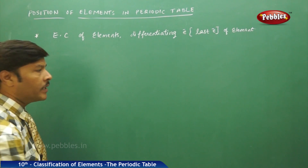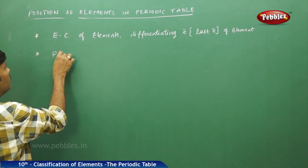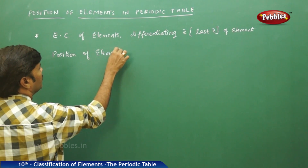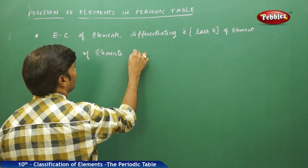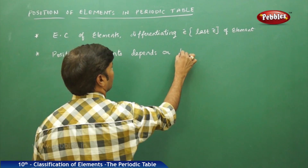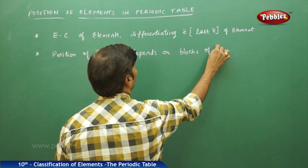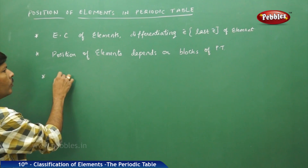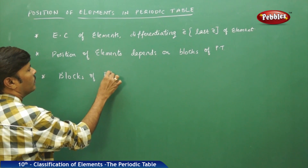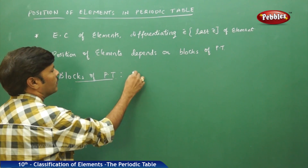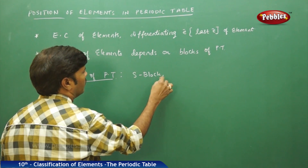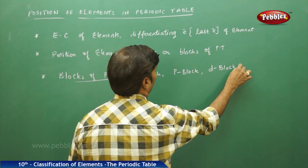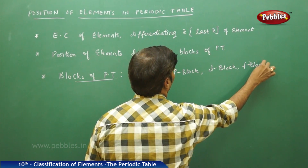The position of elements depends on the blocks of the periodic table. The blocks of the periodic table are made up of s-block, p-block, d-block, and f-block elements.